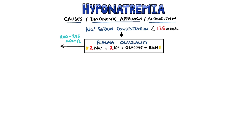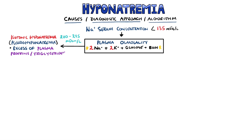If the plasma osmolality is normal — so between 280 and 295 milliosmoles per litre — then you have an isotonic hyponatremia, which is a pseudo-hyponatremia. In this scenario, there is an excess in plasma proteins or triglycerides, which makes the sodium concentration appear low. Without these excess proteins or triglycerides, the concentration would be normal.